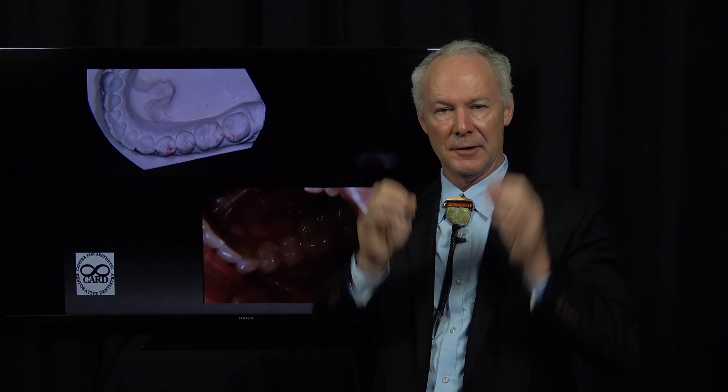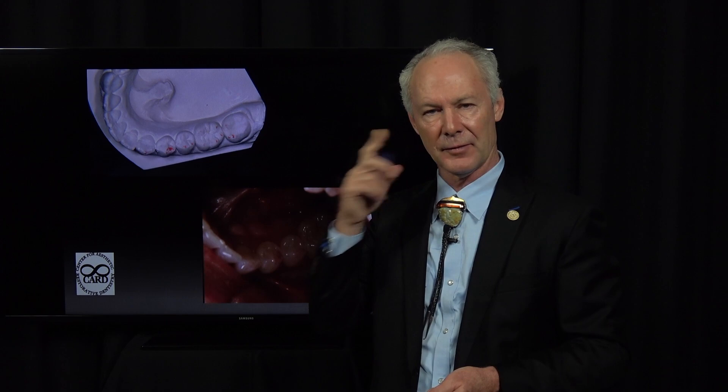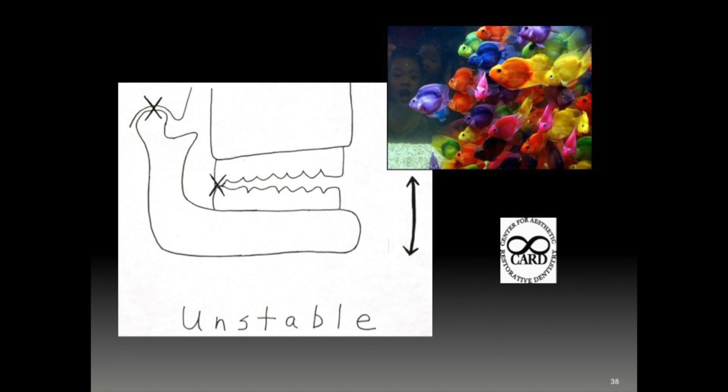If you've taken a correct centric relation record, check the occlusion on your mounted study models — the first contact in centric relation on the stone model should be the same first contact in centric relation when you tap the teeth together with the condyles seated in the patient's mouth. So the first tooth that contacted on the model should match the tooth that contacted in the patient's mouth when you placed the condyles in centric relation and touched the teeth together gently.